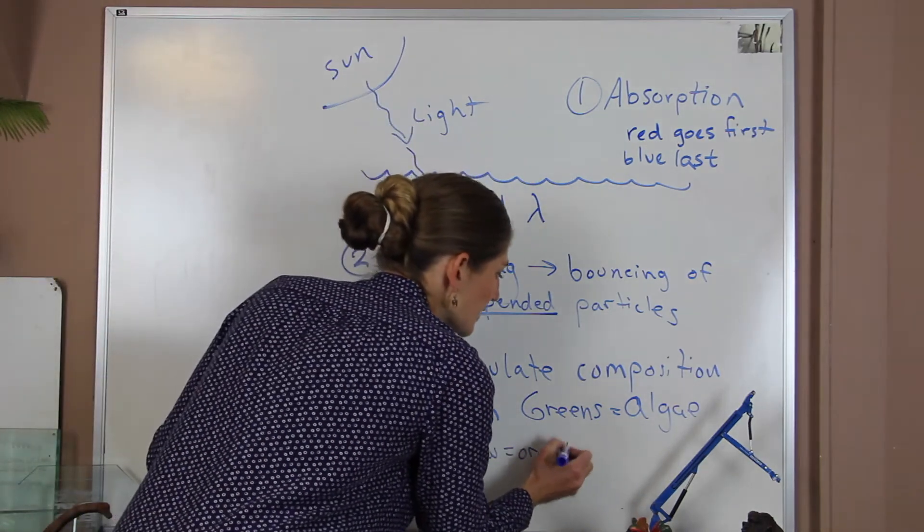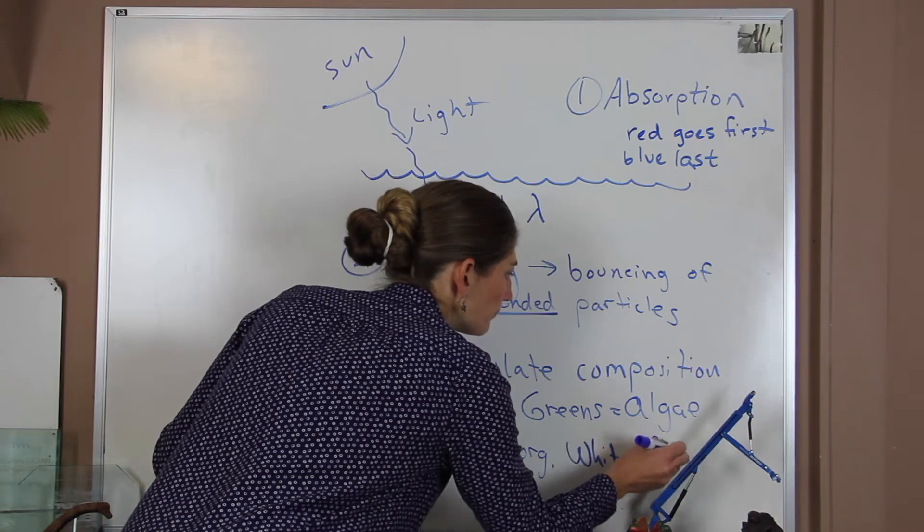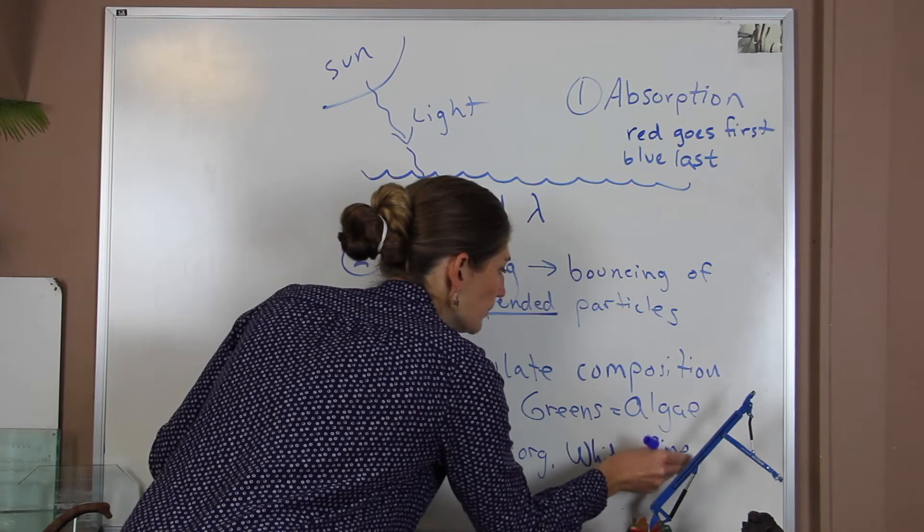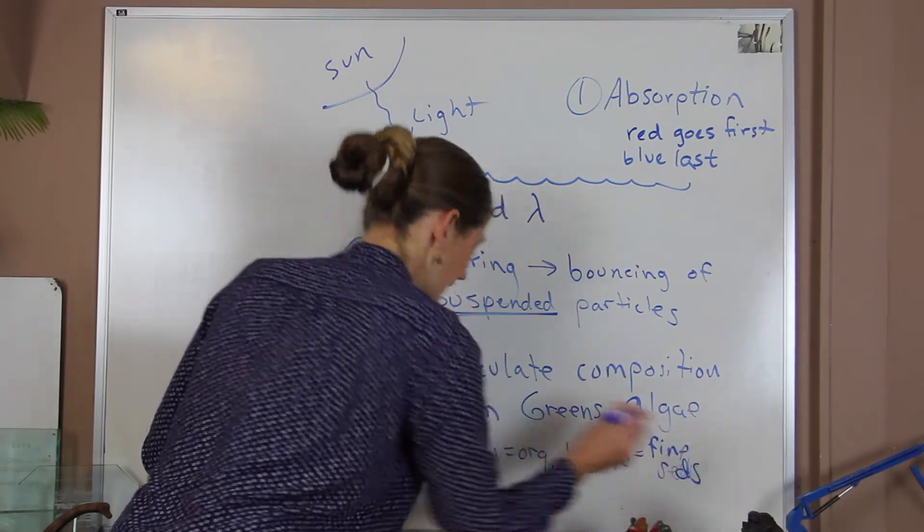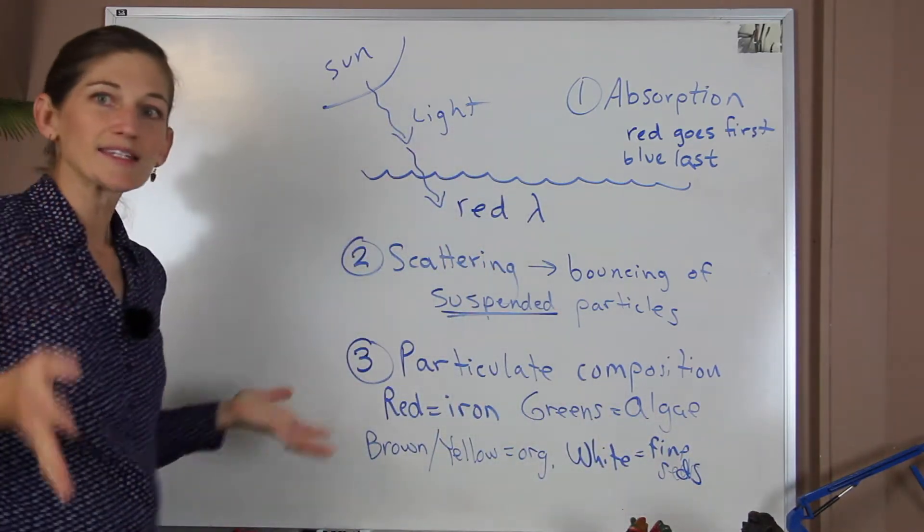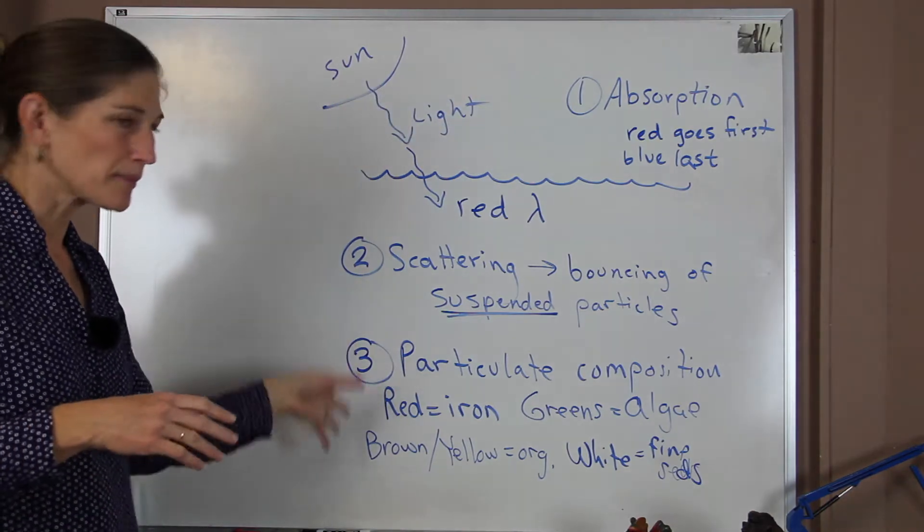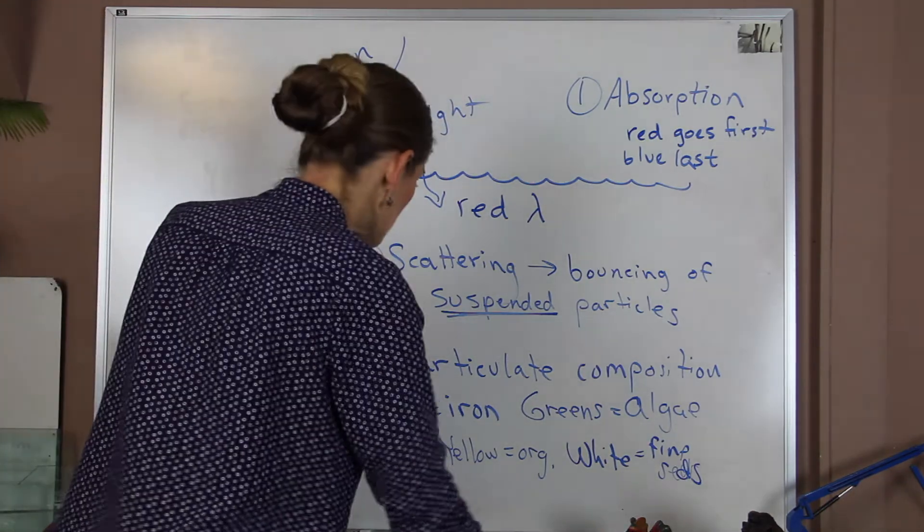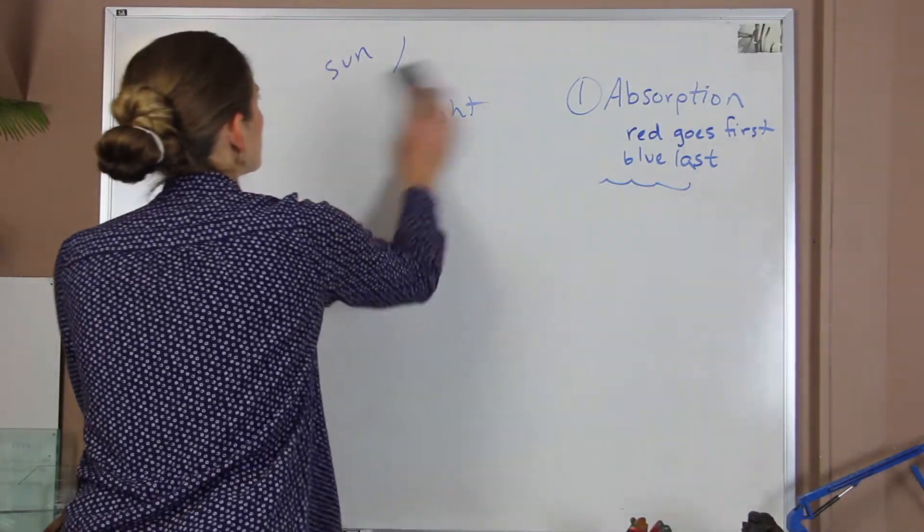And then some really fine sediments can give it a white color. So fine seds would be the last thing. All right, so that's what's happening with the water. We have absorption, scattering, and then the particulate matter composition. So what's really happening with all of these glacial lakes.